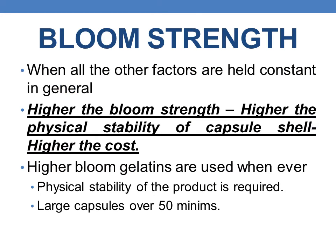In general, when all the other factors are held constant, higher the bloom strength, higher the physical stability of the capsule shell and higher will be the cost of production. Gelatins with higher bloom strength are used whenever there is a necessity for physical stability of the product, or in the production of capsules which are larger than size 15. They are also employed in the production of hygroscopic substances.